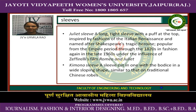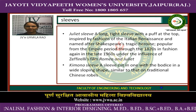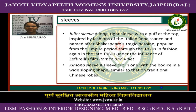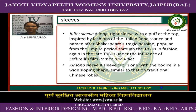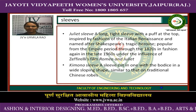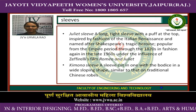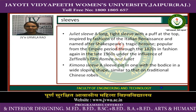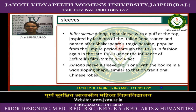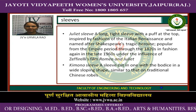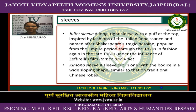Juliet sleeve: a long tight sleeve with a puff at the top, inspired by fashions of the Italian Renaissance and named after Shakespeare's tragic heroine, popular from the Empire period through the 1820s and in fashion again in the late 1960s under the influence of the Geoffrey Lee film Romeo and Juliet. Kimono sleeve: a sleeve cut in one with the bodice in a wide sloping shape, similar to that of a traditional Japanese robe.